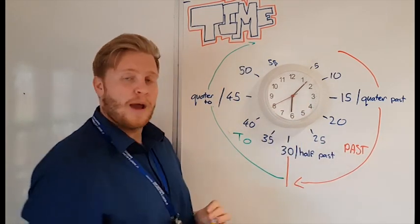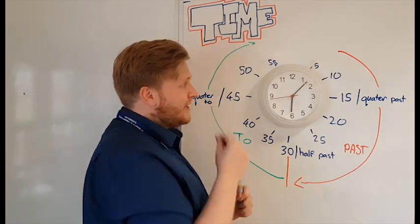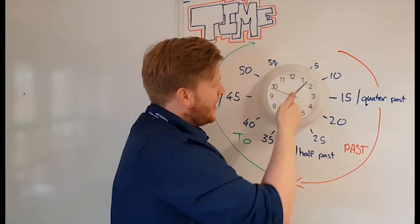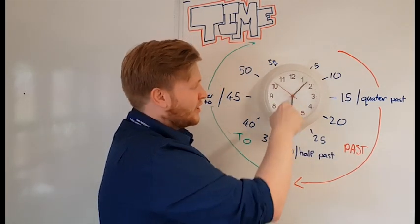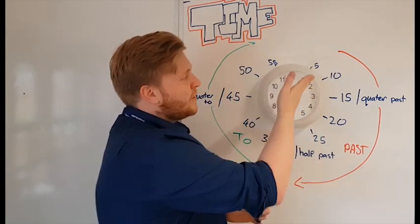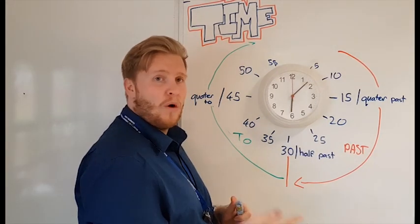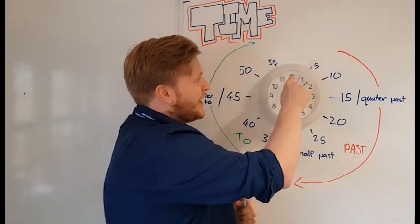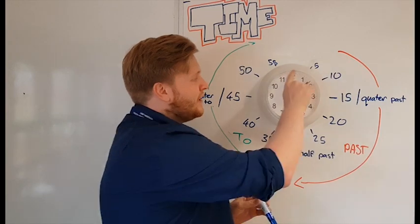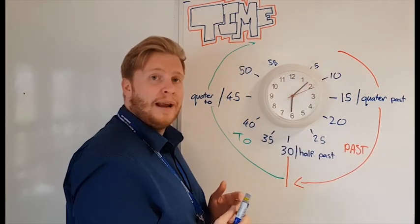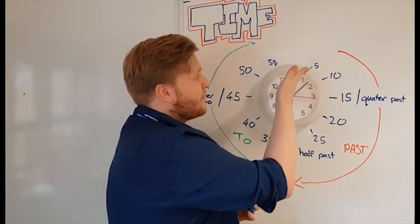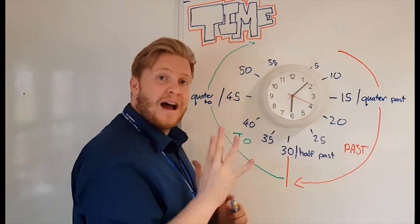When we want to tell the time we need to look at these two hands. Firstly we would look at the hour hand so we can see what hour it is. It is something to do with the hour of 6 o'clock because our little hand is pointing at 6. The big hand, when we look at the big hand that is showing us the minutes, either minutes past the hour or minutes to the hour. This is telling us how many minutes past 6 o'clock it actually is. Now we use these numbers around the outside but we have to use it differently for minutes. It's not 1, 2, 3 and all the way around 12 minutes past 6.